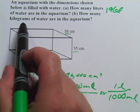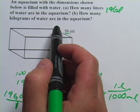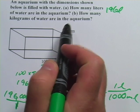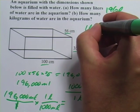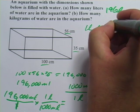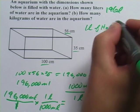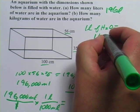Let's look at part B. It says, how many kilograms of water are in the aquarium? And this is another cool thing to learn about the metric system. One liter of water has a mass of 1 kilogram.